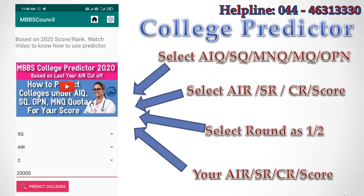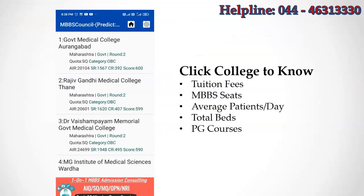You can also use the college predictor option available in the MBBS Council app to get the list of colleges you have a chance to get. You will be asked to enter which quota you are looking for and choose All India rank cutoff, state rank cutoff, category rank cutoff, or NEET score. Choose state rank and then enter 2 for the round selection. Enter your Maharashtra state rank for common category and reservation category rank if you belong to any particular reservation. After that, click the predict colleges button. You will see a list of probable Maharashtra state medical colleges where you have a good chance, with cutoff details displayed along with college type, quota, and reservation category.